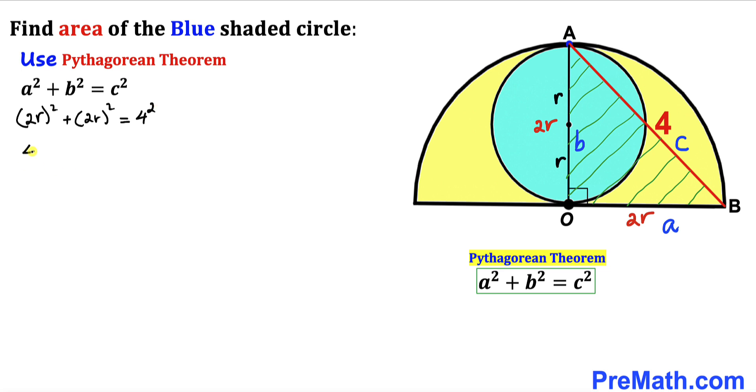Let's simplify. So this is going to give us 4r² + 4r² = 16. Let's combine the like terms. So this is going to give us 8r² = 16.